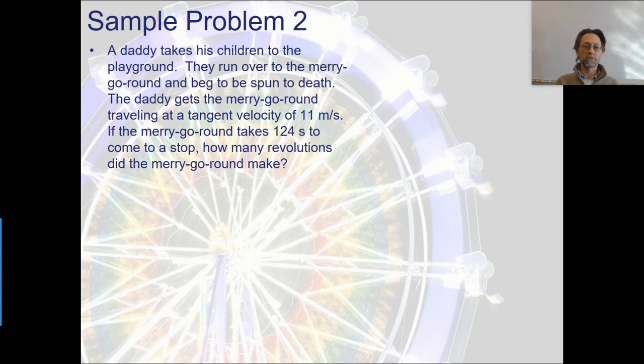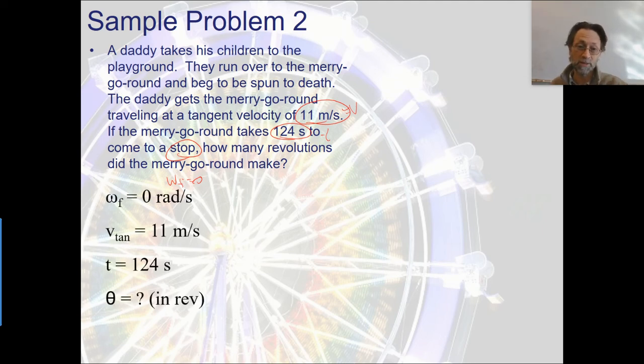Next sample problem. A daddy takes his children to the playground and they run over to the merry-go-round and beg to be spun to death. So the daddy gets the merry-go-round traveling at a tangent velocity of 11 meters per second. If the merry-go-round takes 124 seconds to come to a stop, how many revolutions did the merry-go-round make? So I'm thinking about this. I've got a couple different things here. This is going to be an initial value, but notice that that's in linear. So I'm going to have to turn that into an angular at some point. I also have a time that it takes. And then since it comes to a stop, I can say that my final omega value is zero, which means my alpha or my angular deceleration should be negative because it's slowing down.